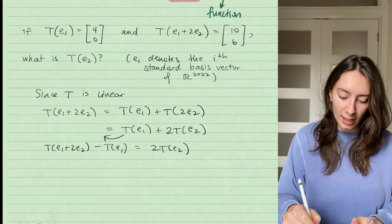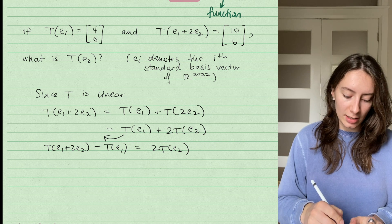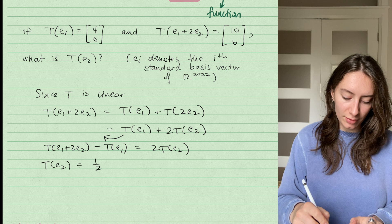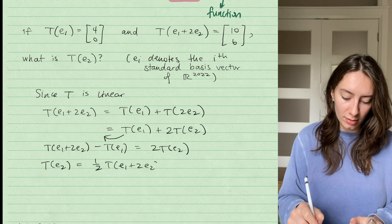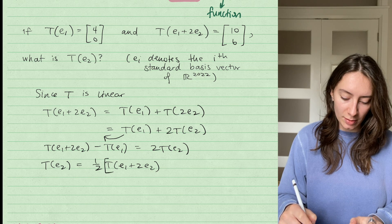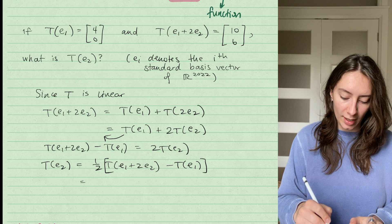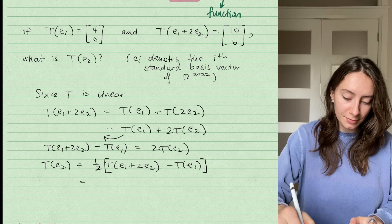And then again, I'm rearranging for T(E_2), so I want to divide everything by 2. And so I get T(E_2) is 1/2 times T(E_1 + 2E_2). This 1/2 is being multiplied by everything minus T(E_1). I've just divided both sides by 2 or multiplied both sides by 1/2.